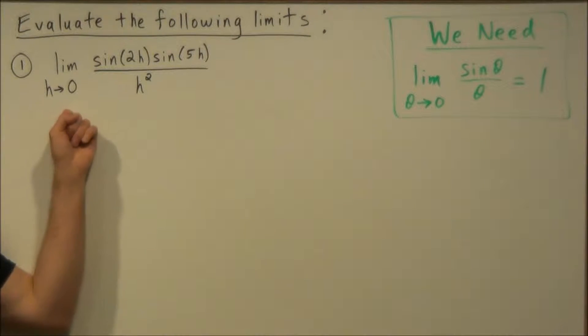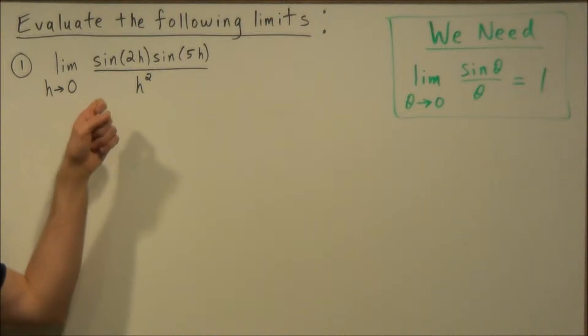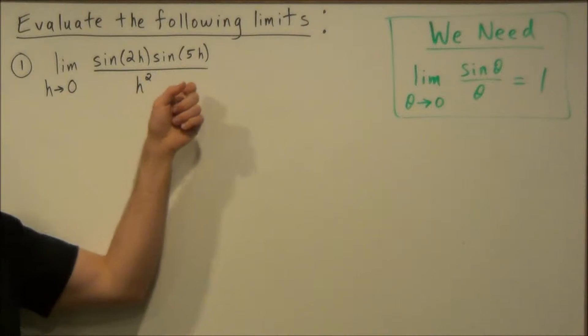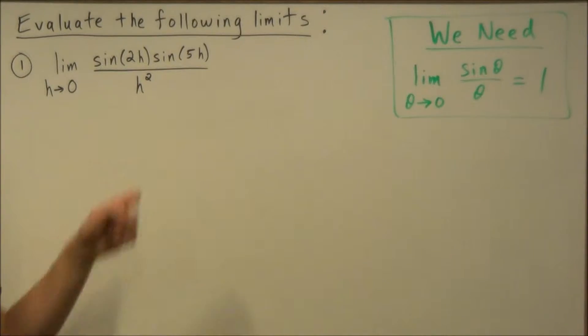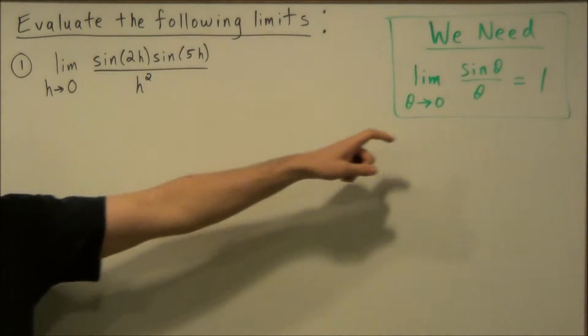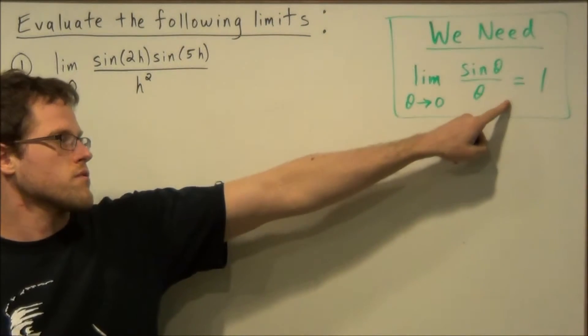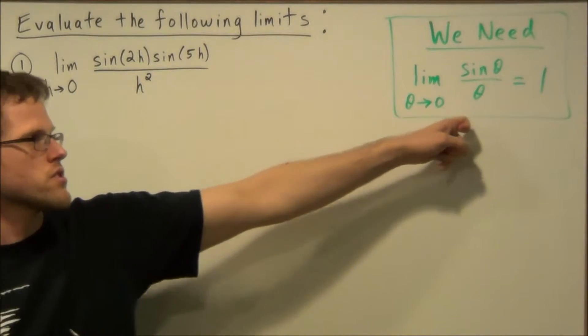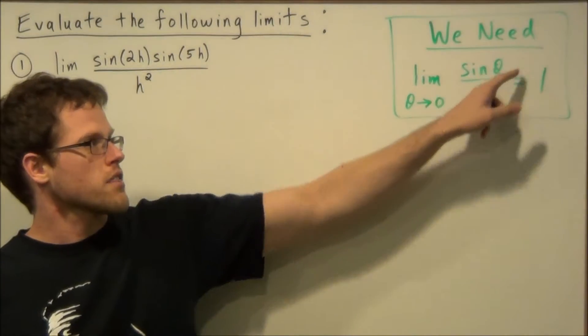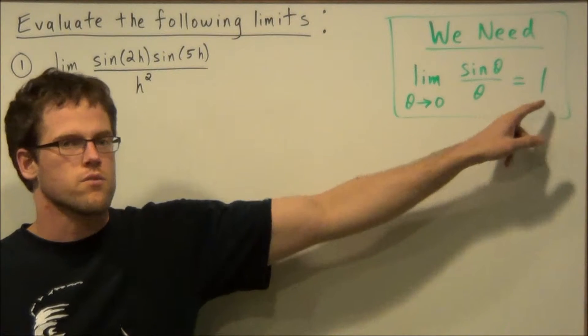First, we have the limit as h goes to zero of sine two h times sine five h over h squared. We're going to use this formula: the limit as theta goes to zero of sine theta over theta equals one.